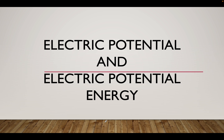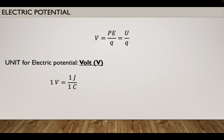Good evening everyone and welcome back to our discussion for this evening. Tonight we will be discussing all about electric potential and also electric potential energy. The symbol for electric potential is capital letter V. Electric potential is equal to the electric potential energy — we call it PE or capital letter U — divided by the point charge Q.